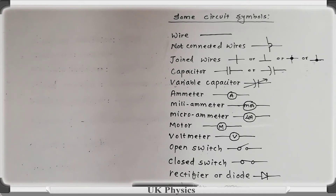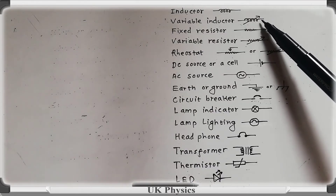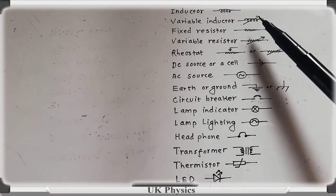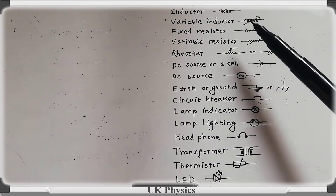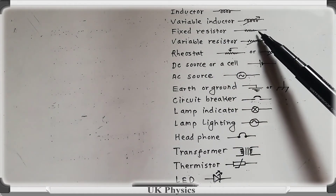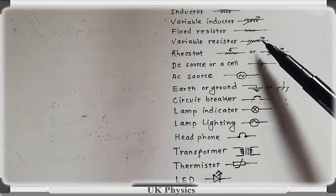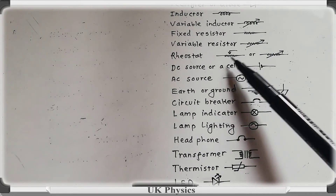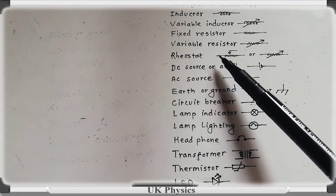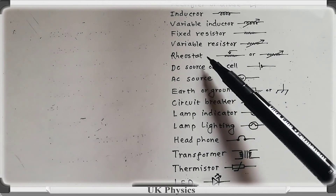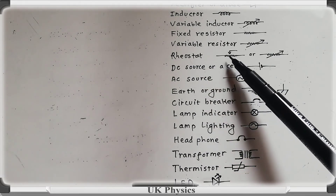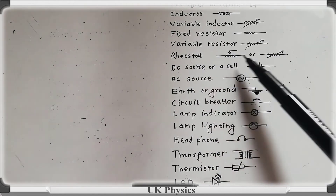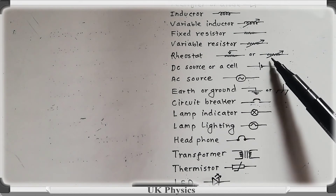This is the circuit symbol of an inductor. This is the circuit symbol of a variable inductor — an inductor is simply a spiral coil. This is the circuit symbol of a fixed resistor. This is the variable resistor, and this is the circuit symbol of a rheostat. A rheostat varies the resistance in the circuit, meaning it also varies the current. So a rheostat is simply a variable resistor and can be represented by this symbol.